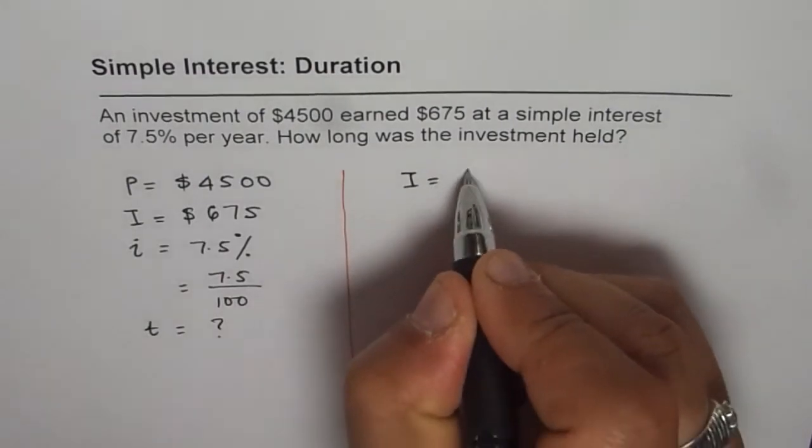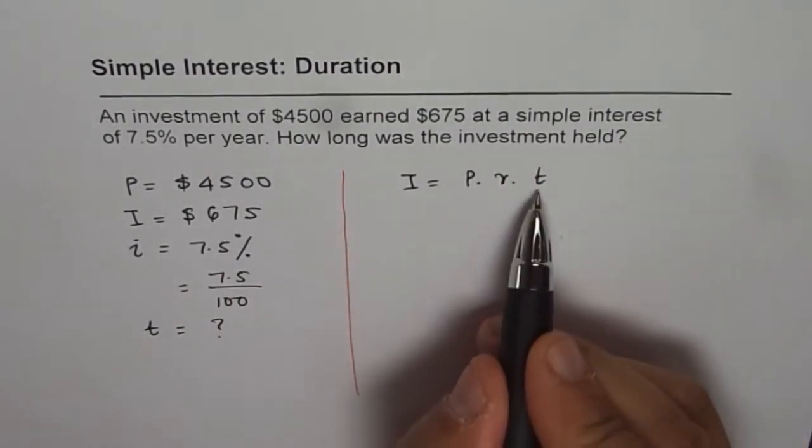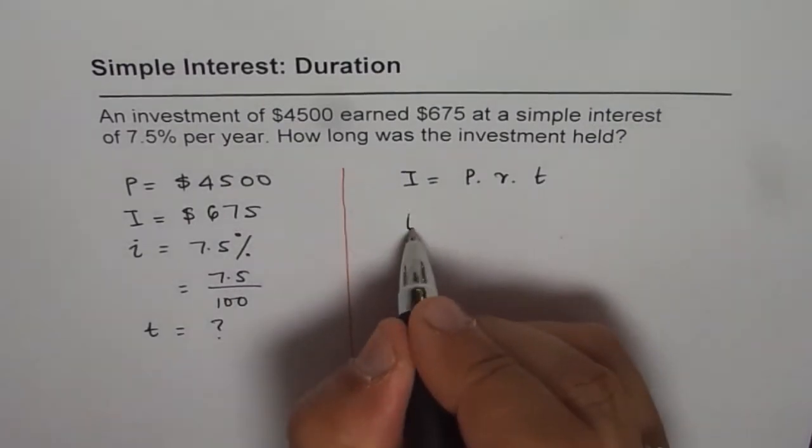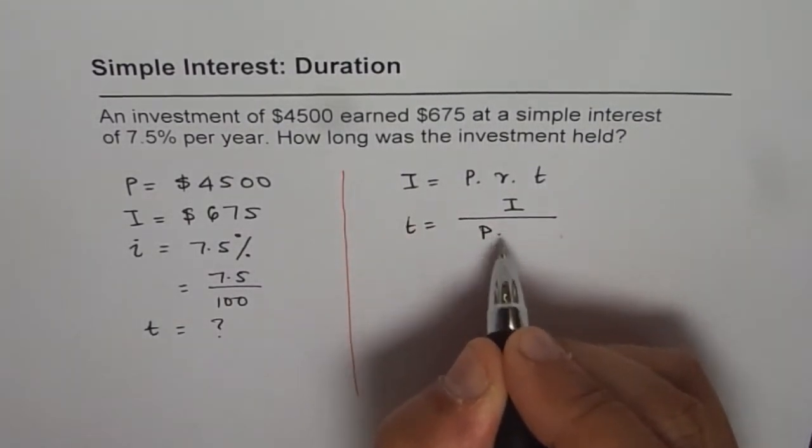Interest is principal amount times rate times t. Now, we need to find what t is. So, t should be equal to interest earned divided by principal and rate.